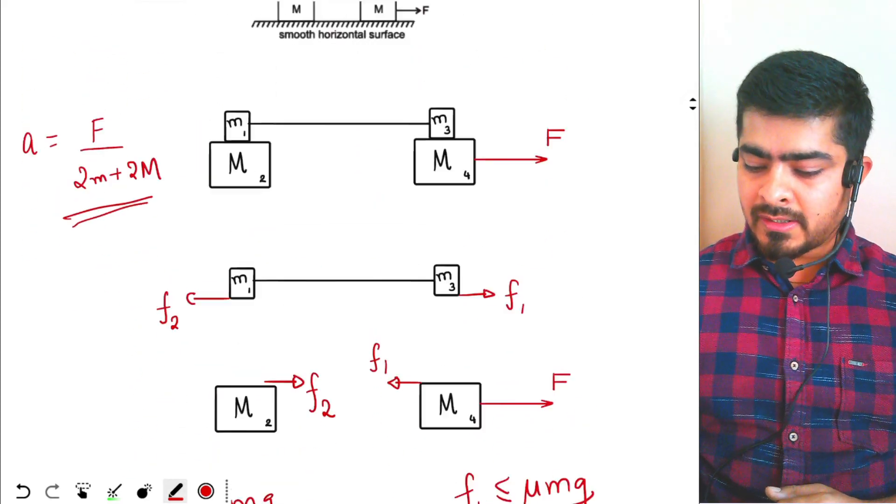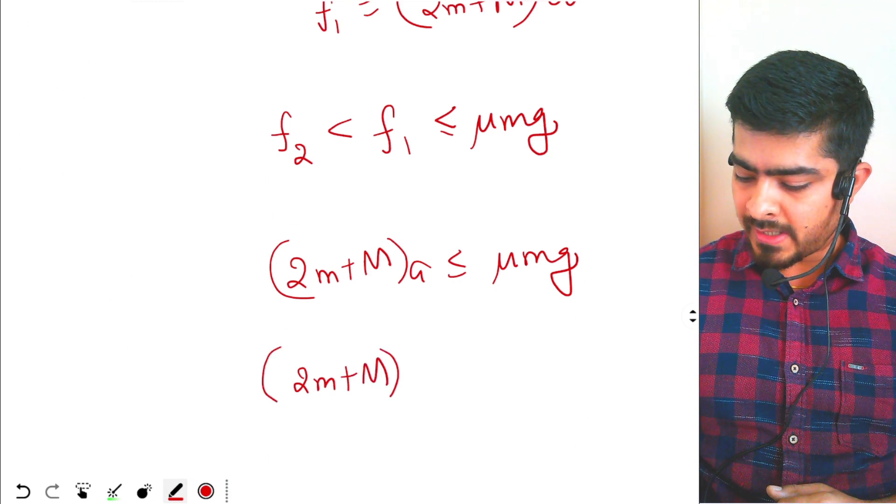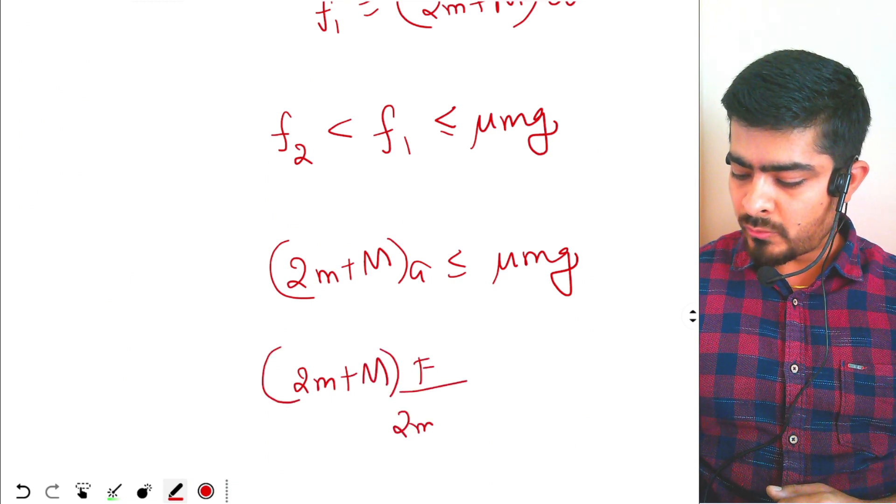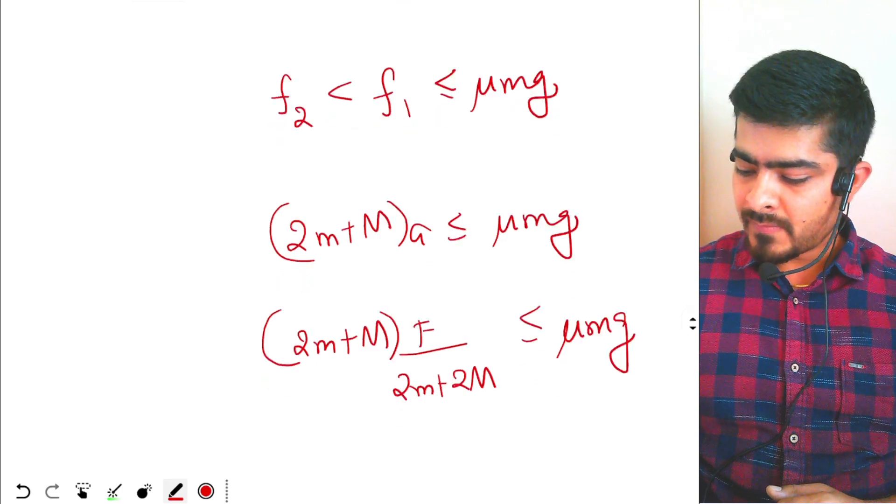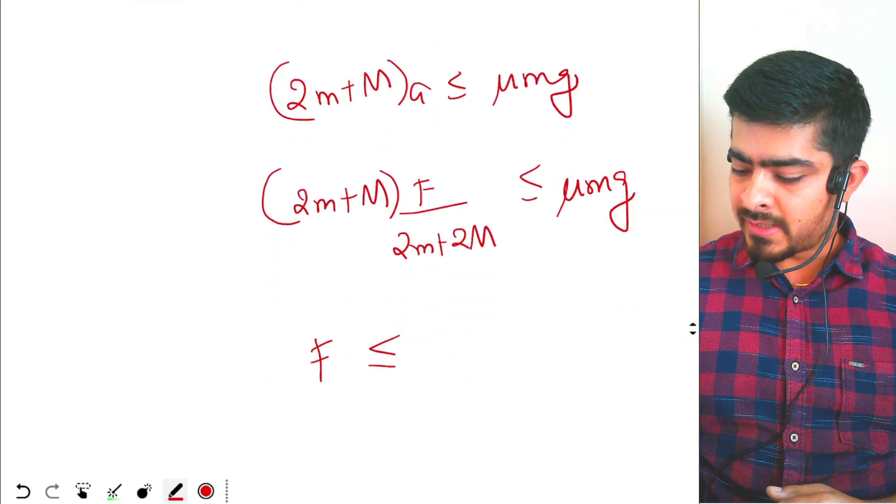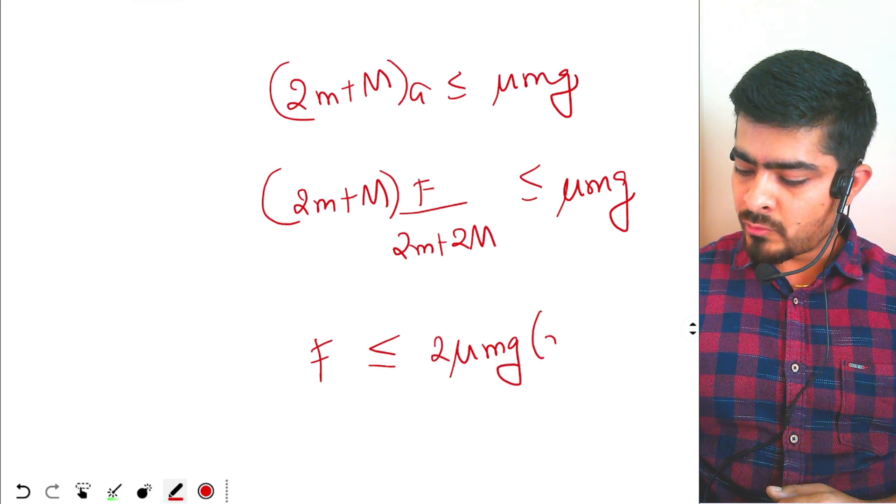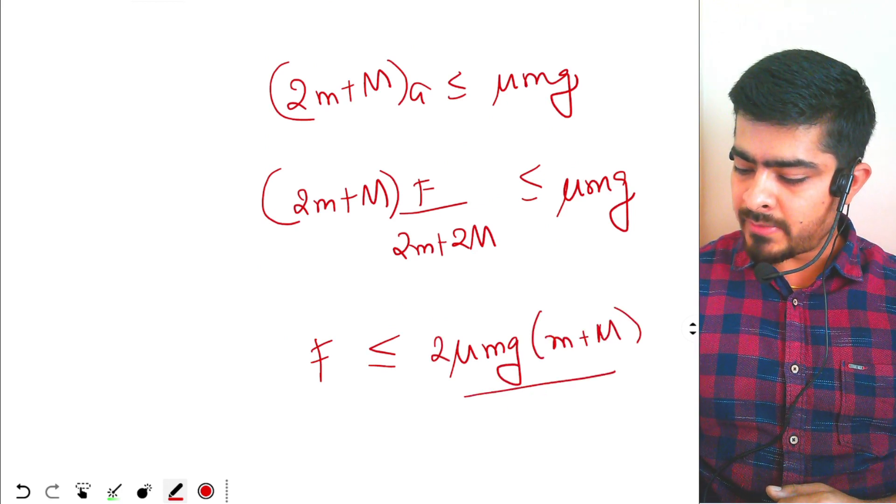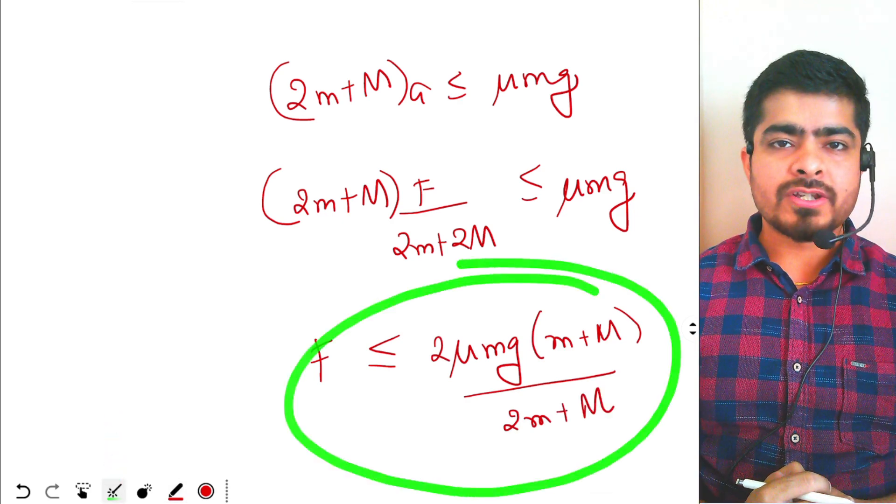Acceleration is F by 2M plus M. So 2M plus M, acceleration is F by 2M plus 2 capital M, that is less than equal to mu Mg. So from here I will get F should be less than equal to mu Mg. I will take 2 common, M plus M divided by 2M plus M. This is your answer for the question.